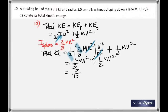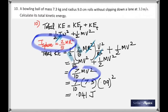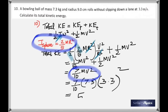So total KE = (7/10)mv². With mass 7.3 kg and velocity 3.3 m/s: (7/10) × 7.3 × (3.3)² = 55.65 joules. Notice you only need the mass and velocity — not the radius.